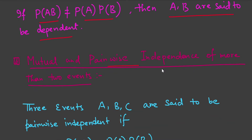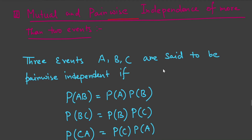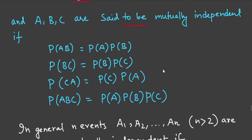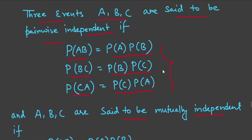Now we come to mutually independent and pairwise independent events for two or more events. Three events A, B, and C are said to be pairwise independent if P(AB) = P(A)·P(B), P(BC) = P(B)·P(C), and P(CA) = P(C)·P(A). They are said to be mutually independent if, in addition to those three conditions, P(ABC) = P(A)·P(B)·P(C). This extra condition is what distinguishes mutually independent from pairwise independent.